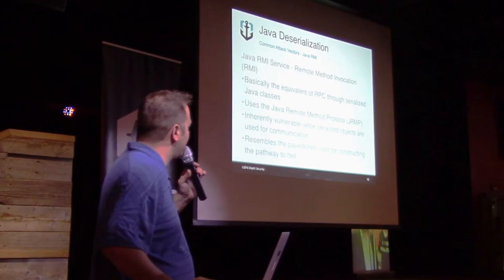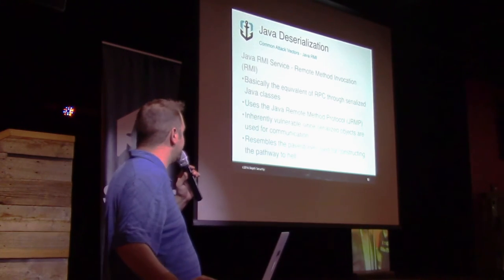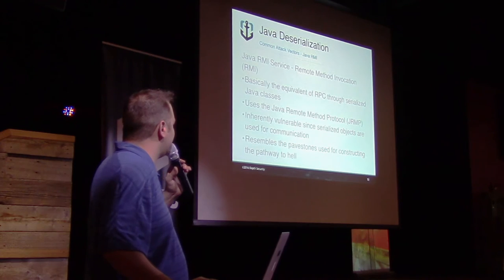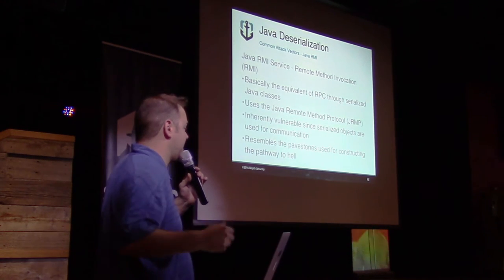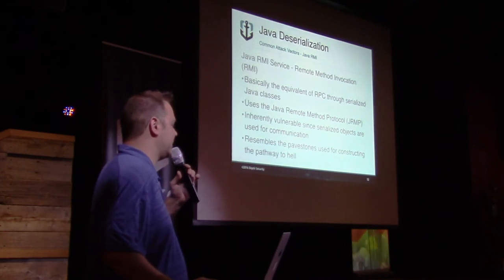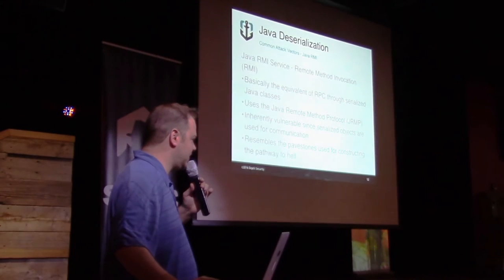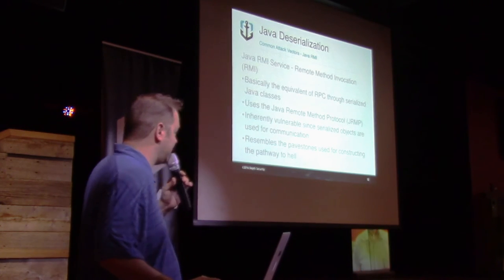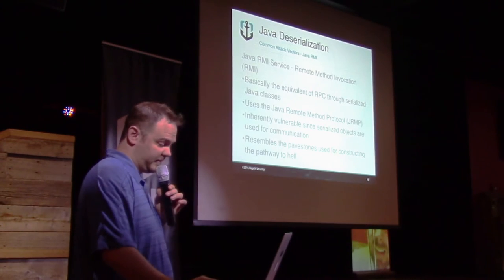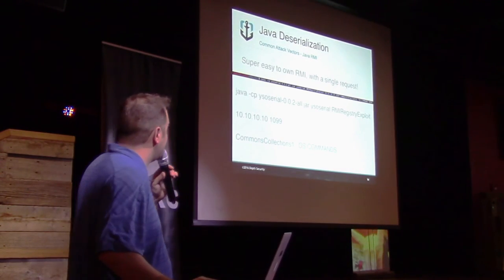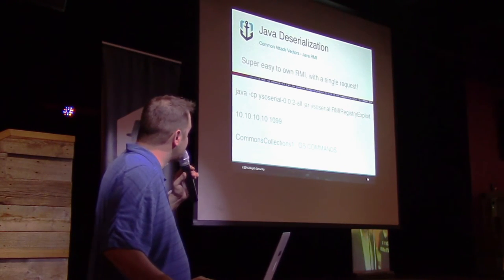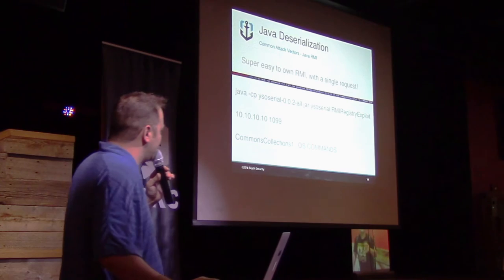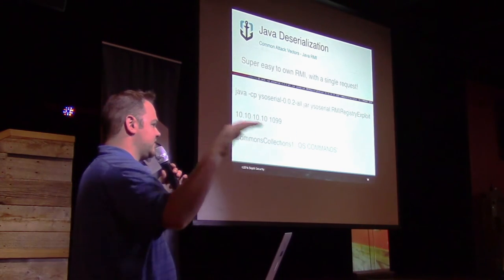The other one is a Java RMI service — Remote Method Invocation. It's kind of like RPC, except using serialized Java classes. It uses JRMP and is inherently vulnerable, since its primary method of communication is Java serialized objects. So if you see this service on the network, you're pretty much going to own it. It's remarkably similar to the paving stones used to construct the pathway to hell, which we all know was paved with good intentions. Using YSO Serial, you just do Java -cp, all that good stuff, your hostname, and the port the RMI service is listening on. Commons Collections 1 is the method you want to use to try and achieve command execution.